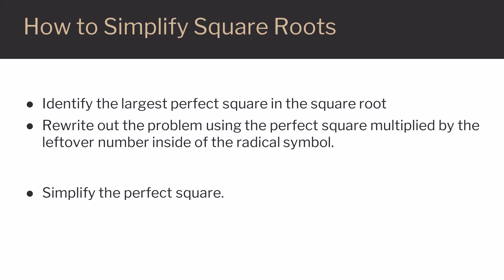First, identify the largest perfect square in the square root. Then rewrite the problem using the perfect square multiplied by the leftover number inside the radical. Finally, simplify the perfect square.